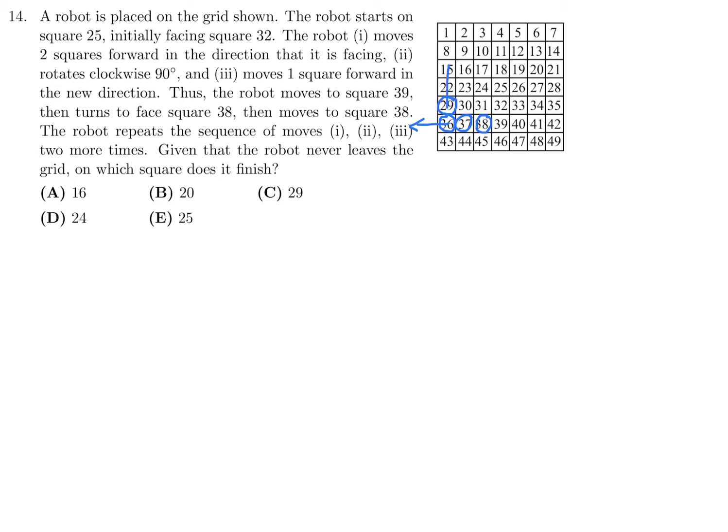Now we've got to do the same thing again. We're pointing in that direction, so we've got to move two in that direction. Then from that, we have to turn 90 degrees, so we're going to be pointing that way. And then in that direction, we're going to move one. And when you do, you end up at 16. So if you follow the directions properly, 16 is the answer. That would be choice A.